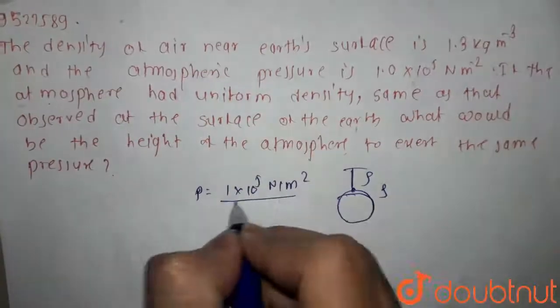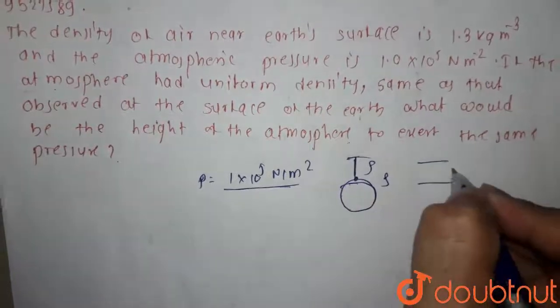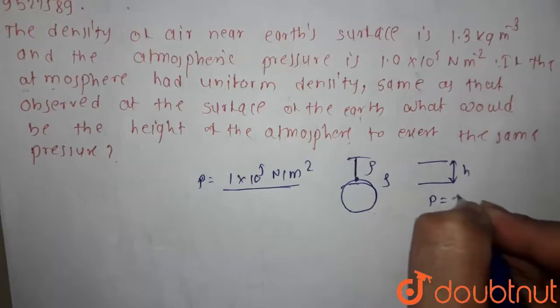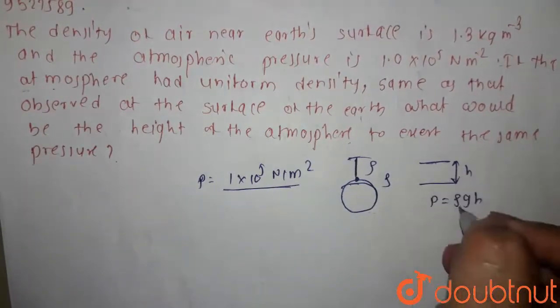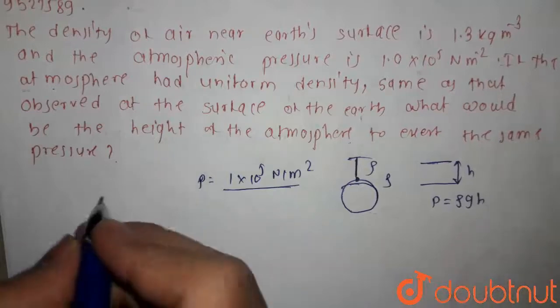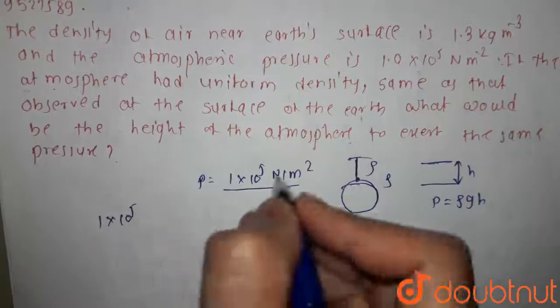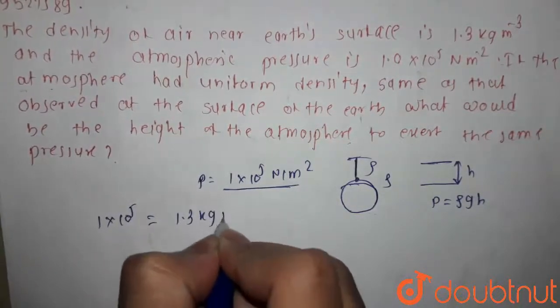How much pressure exerted for this height? If we take some h height of a column, the pressure is rho into g into h. So, the pressure is 1.3 kg per meter cube.